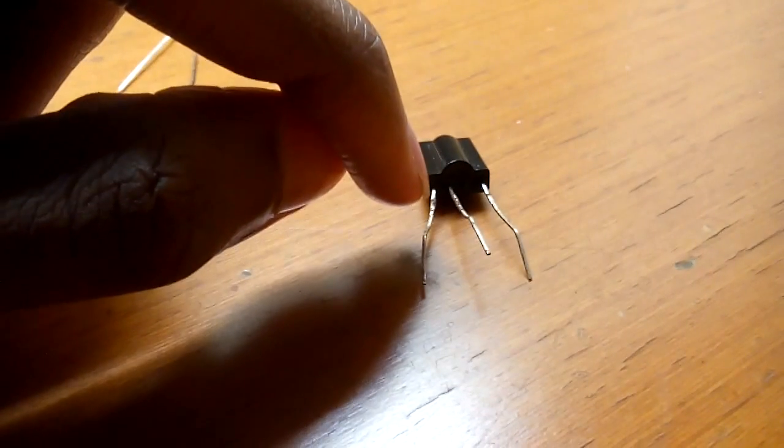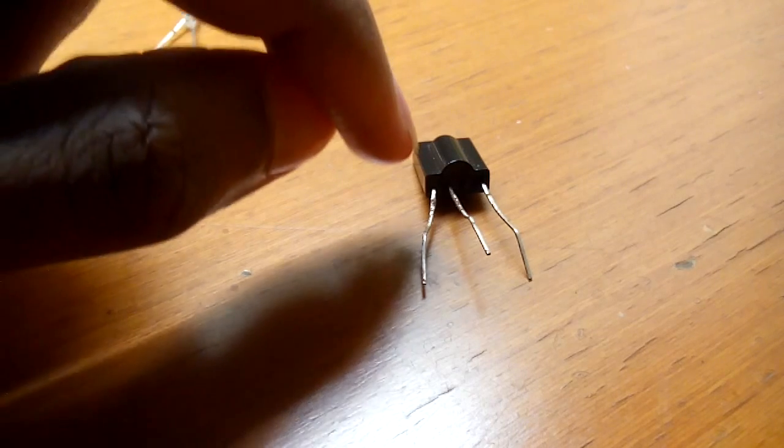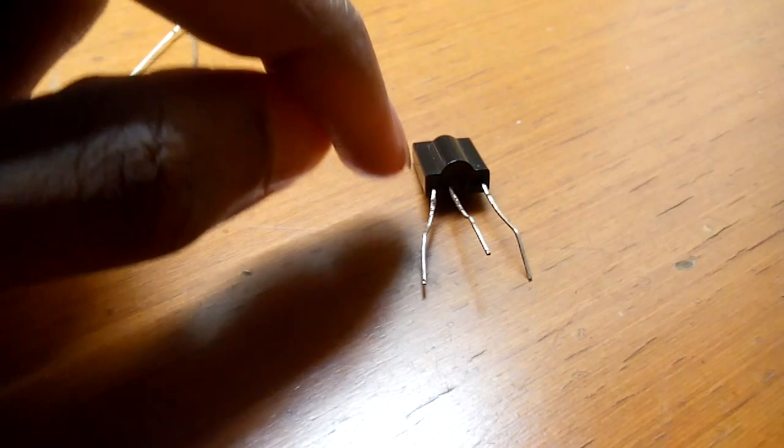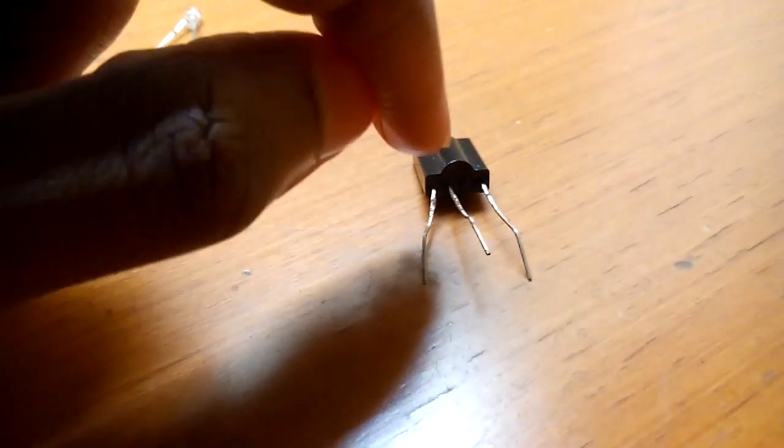The first pin will have the negative side of the battery and the middle pin will have the positive side of the battery. After connecting you will get something like this.